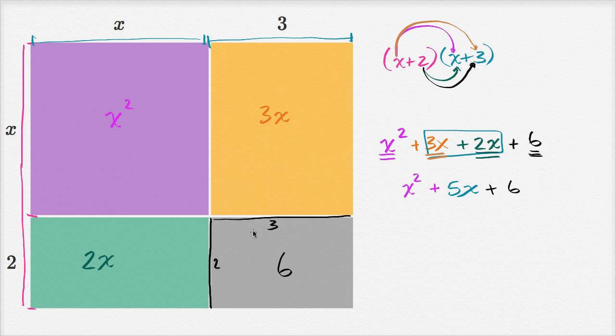So what this area model does for us, is it hopefully makes a visual representation of why it makes sense to multiply binomials the way we do. And in other videos, we talk about it as applying the distribution property twice, but this gives you a more visual representation for why it actually makes sense.